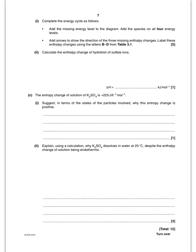The enthalpy change of solution of potassium sulfate has an entropy of plus 225 J K⁻¹ mol⁻¹. This is a significantly positive value because the aqueous particles are far more disordered than in the solid. In the solid, potassium and sulfate ions are in fixed positions, but when dissolved in water those ions are free to move around, so disorder has increased.